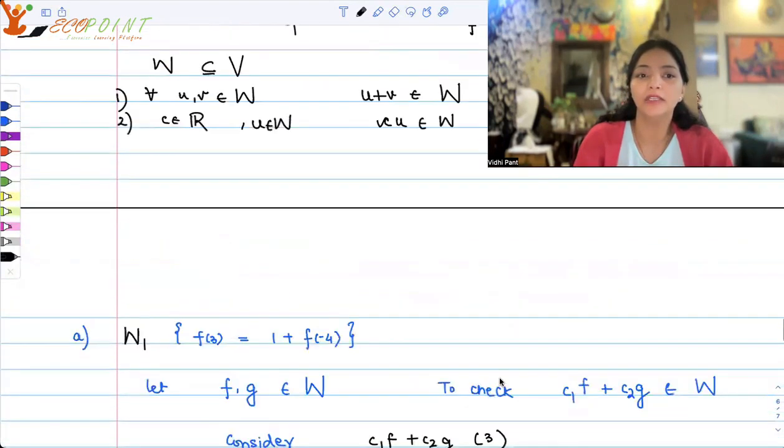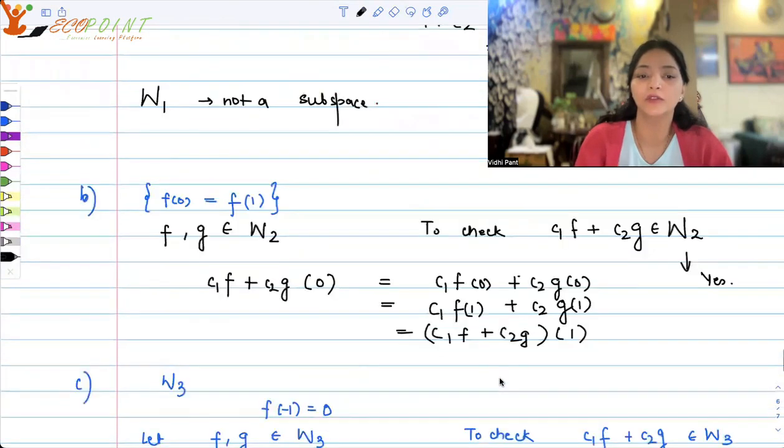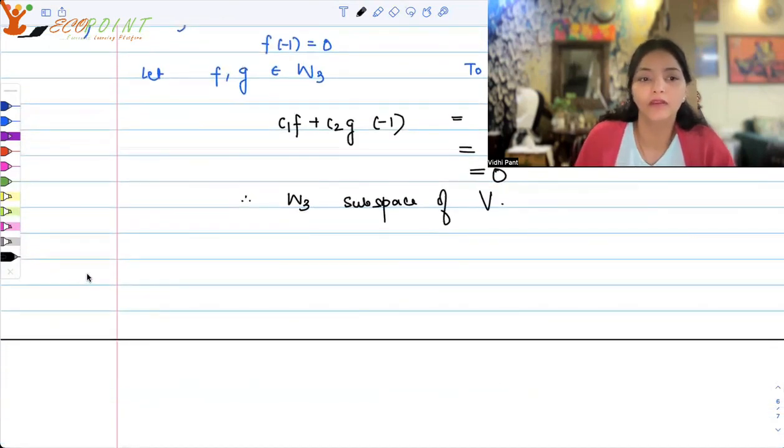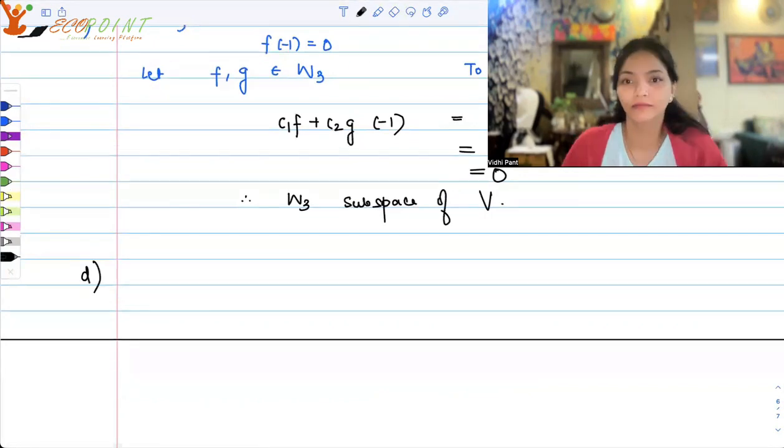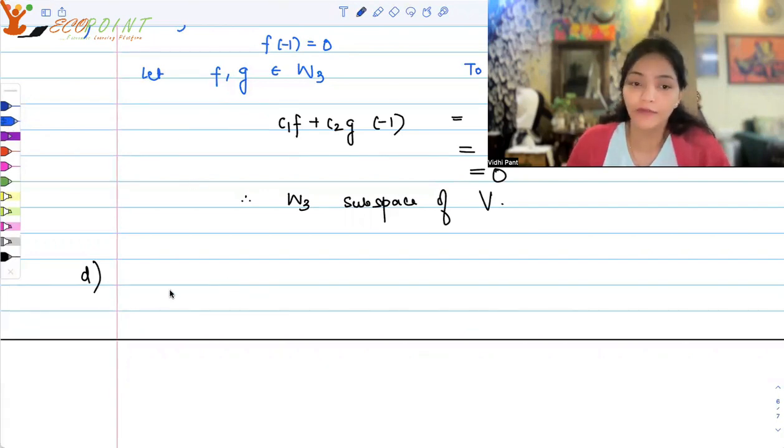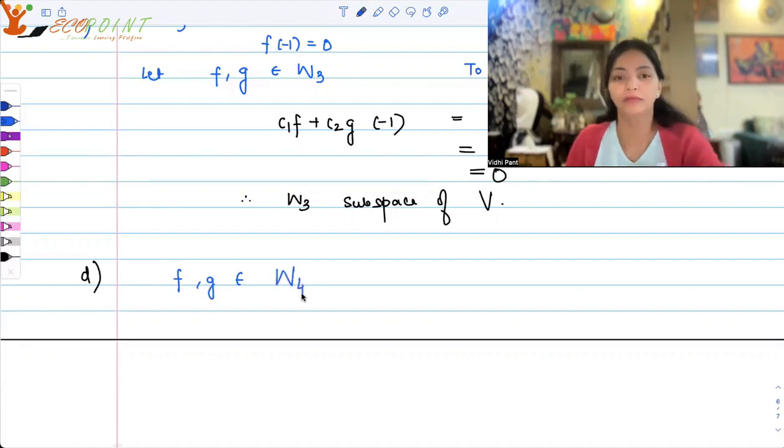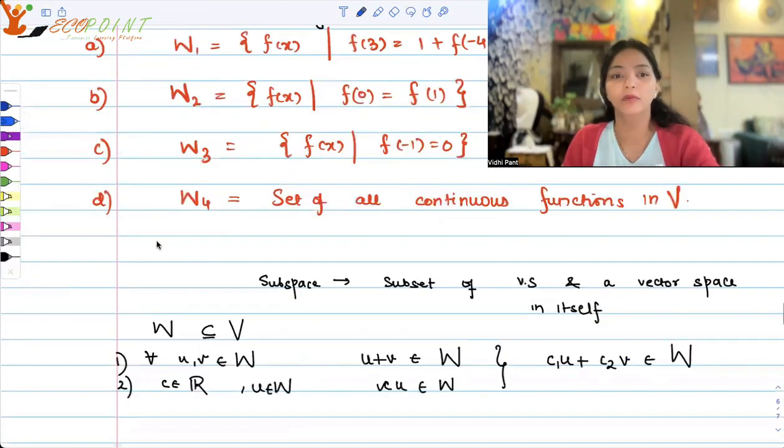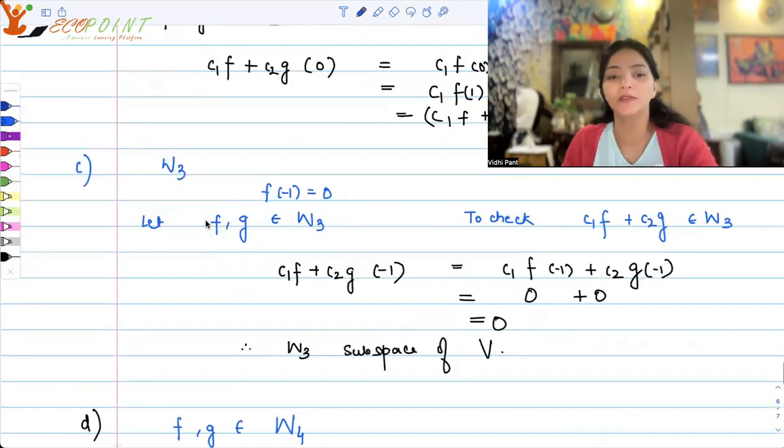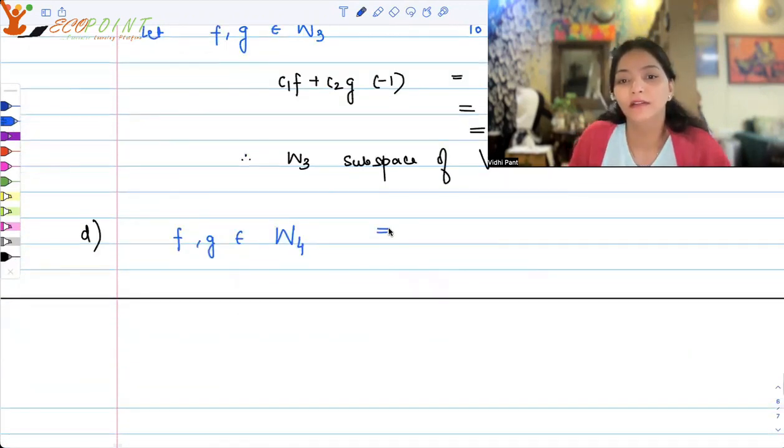The last option is set of all continuous functions in V. So let f and g belong to W₄, the set of all continuous functions. So this implies that f and g are continuous.